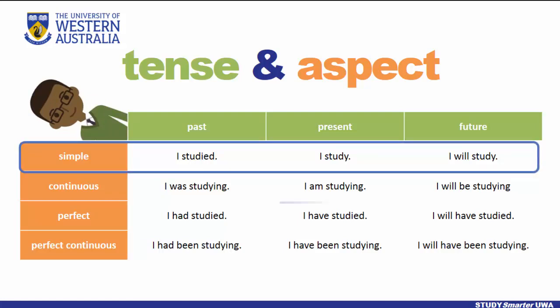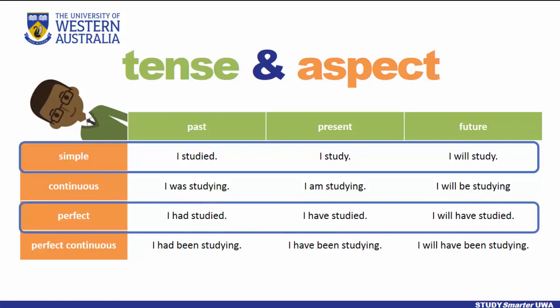For the purposes of this video, all you need to know is that most academic writing uses the simple aspect, with the occasional perfect form, but continuous and perfect continuous forms are rare. Although there are some patterns for how tenses are used in academic writing, there are no hard and fast rules, and you will in all likelihood find variations and exceptions the more you read.